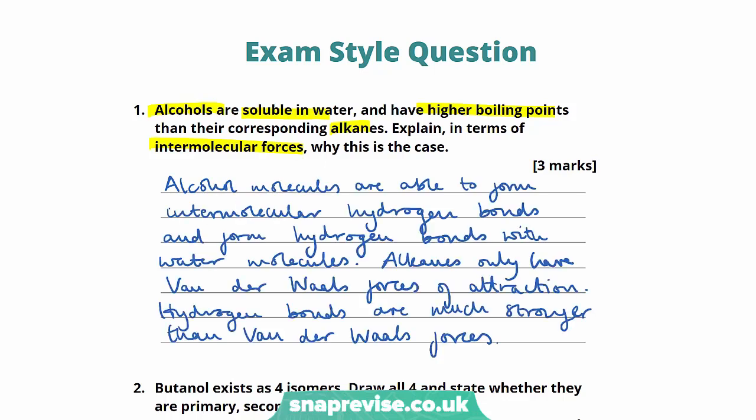I've explained that alcohol molecules are able to form intermolecular hydrogen bonds and form hydrogen bonds with water molecules, while alkanes only have van der Waals forces of attraction, and hydrogen bonds are much stronger than van der Waals forces. We get our first mark for explaining that alcohol molecules can form hydrogen bonds both with other alcohol molecules and with water molecules. Our second for explaining that unlike alcohol molecules, alkanes only have van der Waals forces of attraction. And explaining that hydrogen bonds are much stronger than van der Waals forces of attraction gets us our third and final mark.